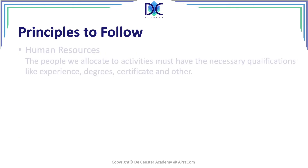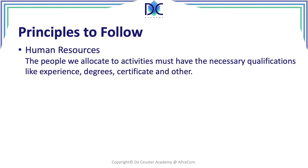What are the principles that we have to follow? When looking at human resources — allocating people — they must have the necessary qualifications like experience, degrees, certificates, and others. Allocating people with a higher qualification may look interesting, but it will have an effect on the cost. On the other hand, people who have higher qualifications and more experience may help you to reduce the duration of the activity.